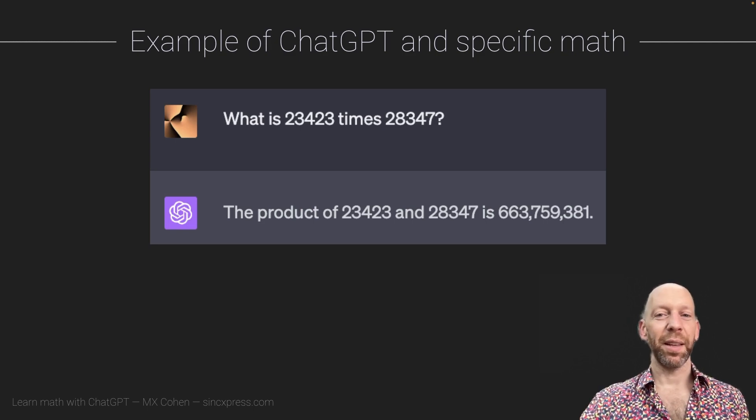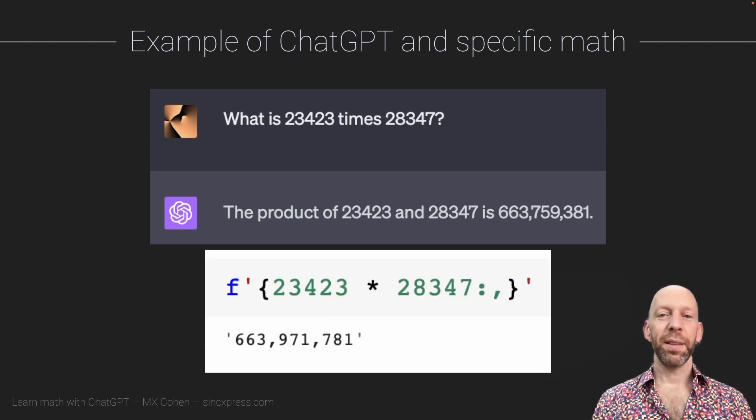Python is just a fancy calculator. So, here you see the real answer, and it's interesting to see that ChatGPT got part of it right. So, it got the order of magnitude correct. It got the first few digits correct, but overall, the answer is wrong.